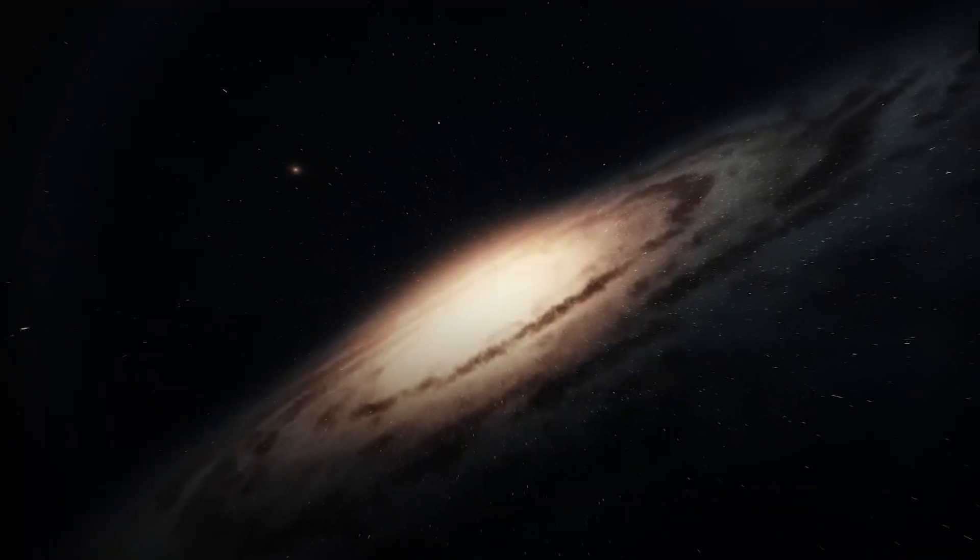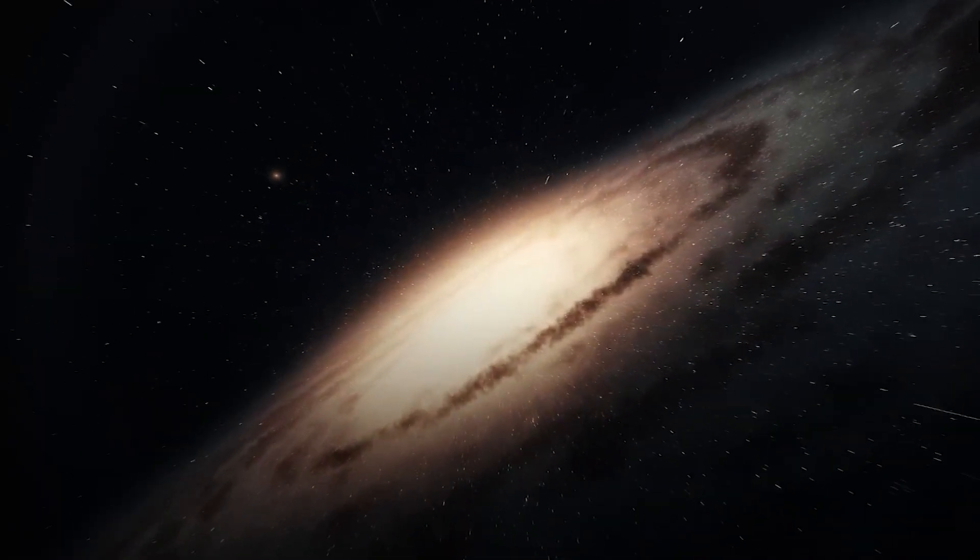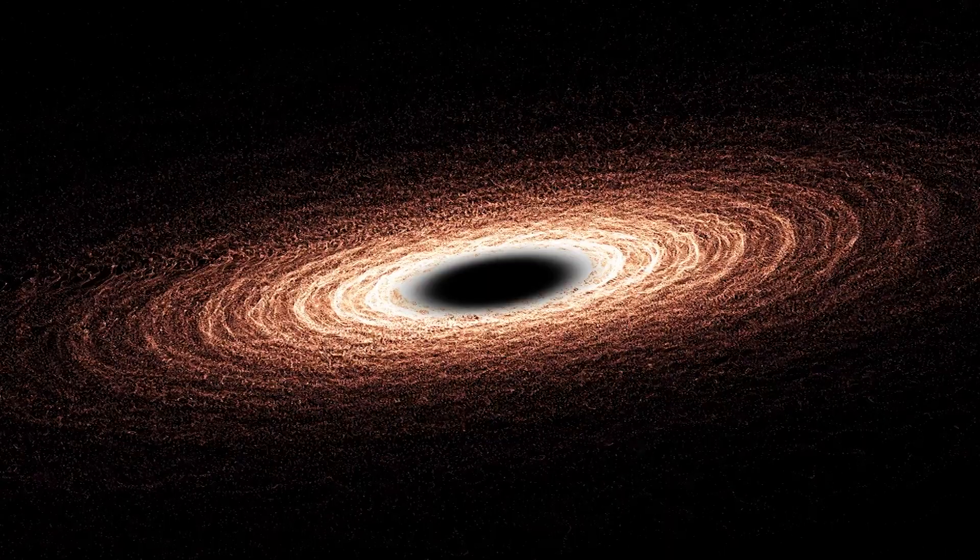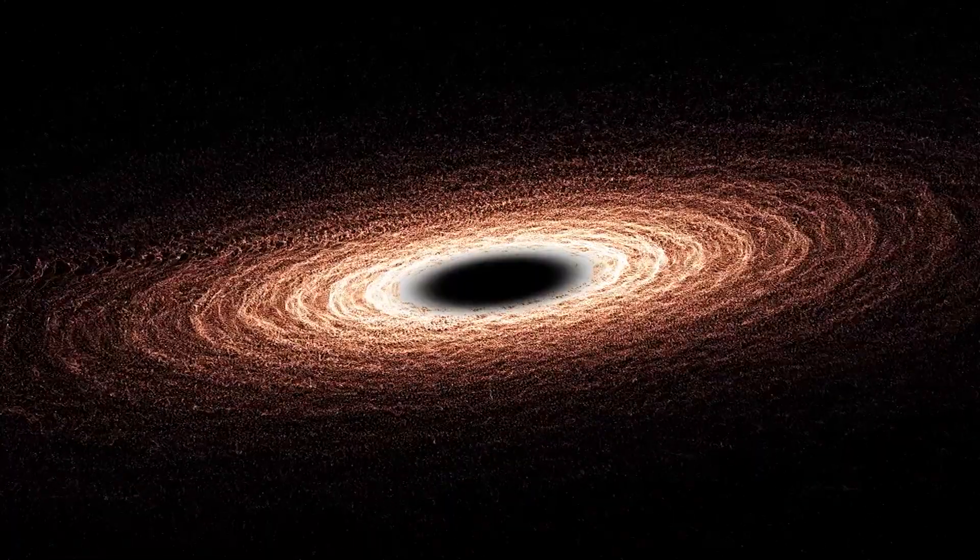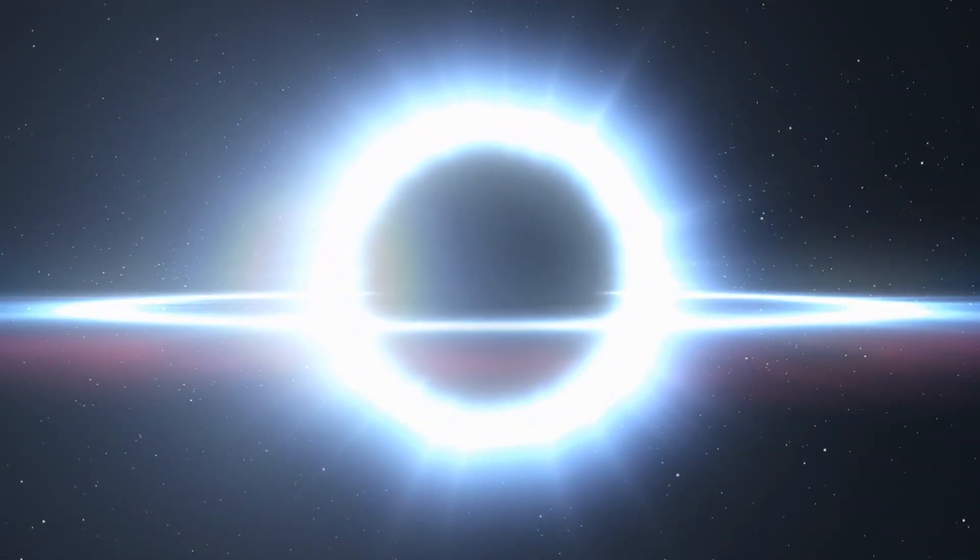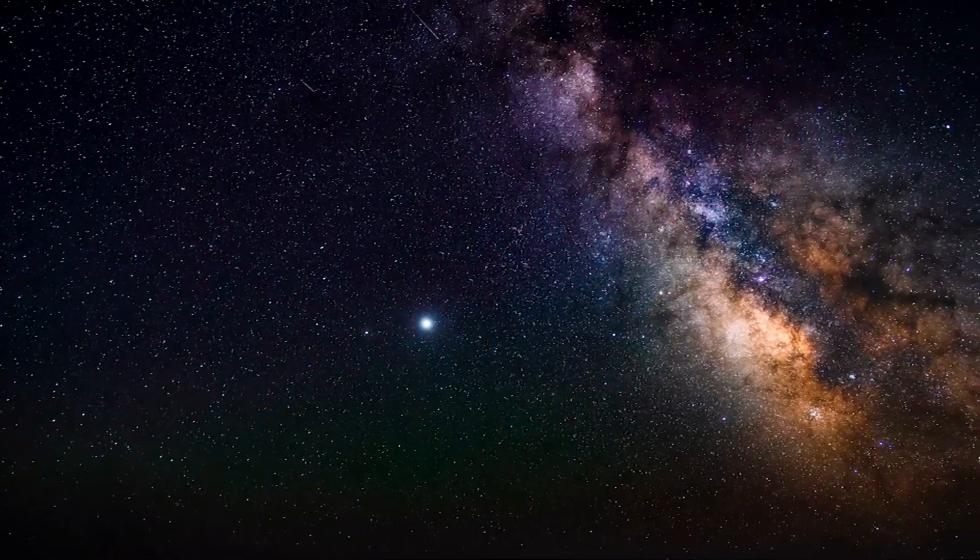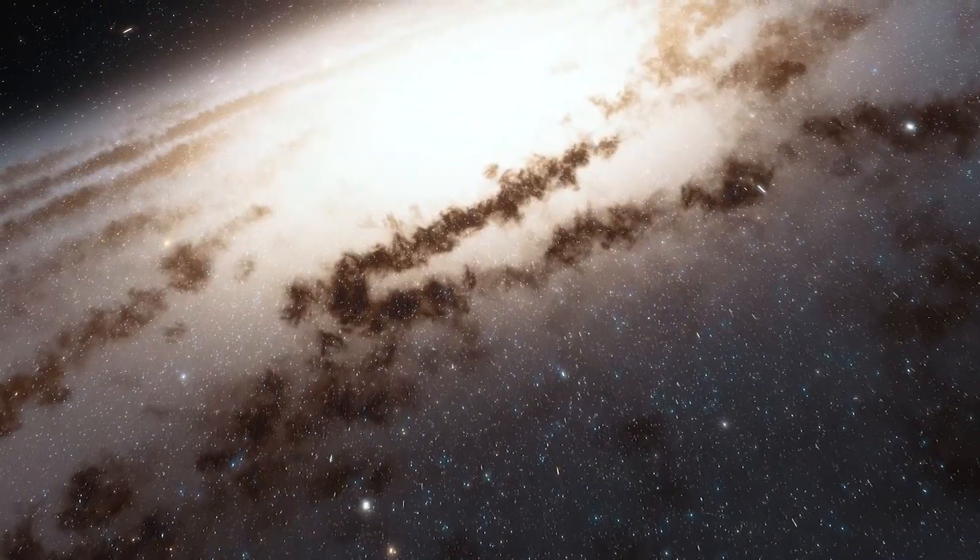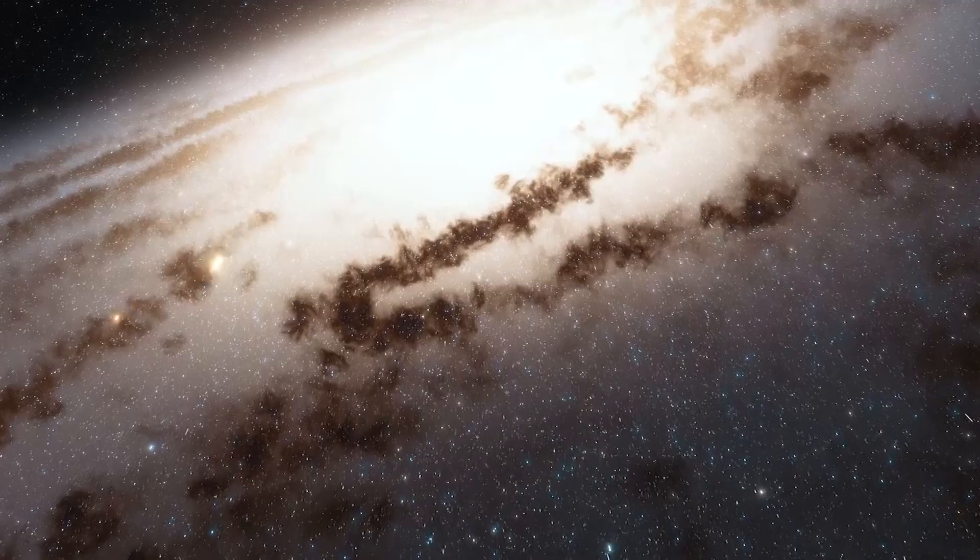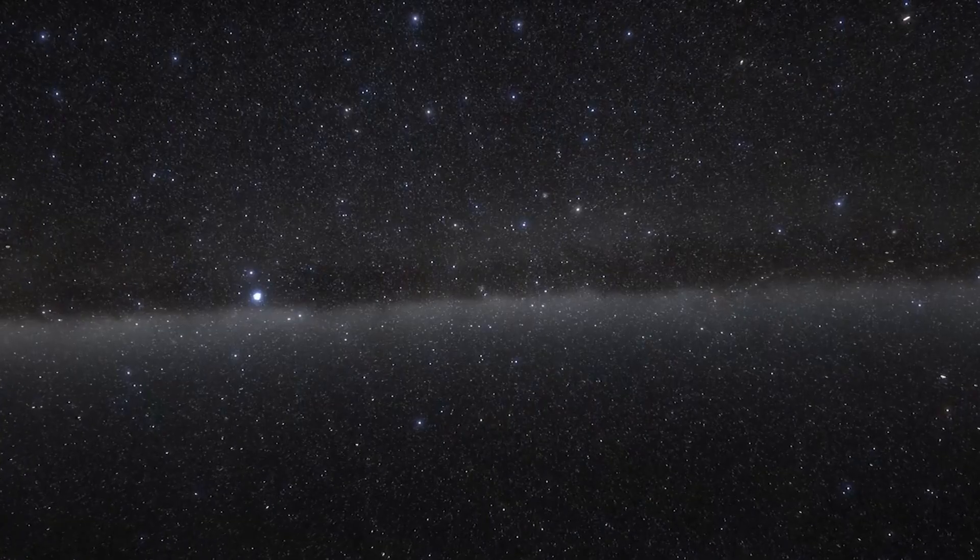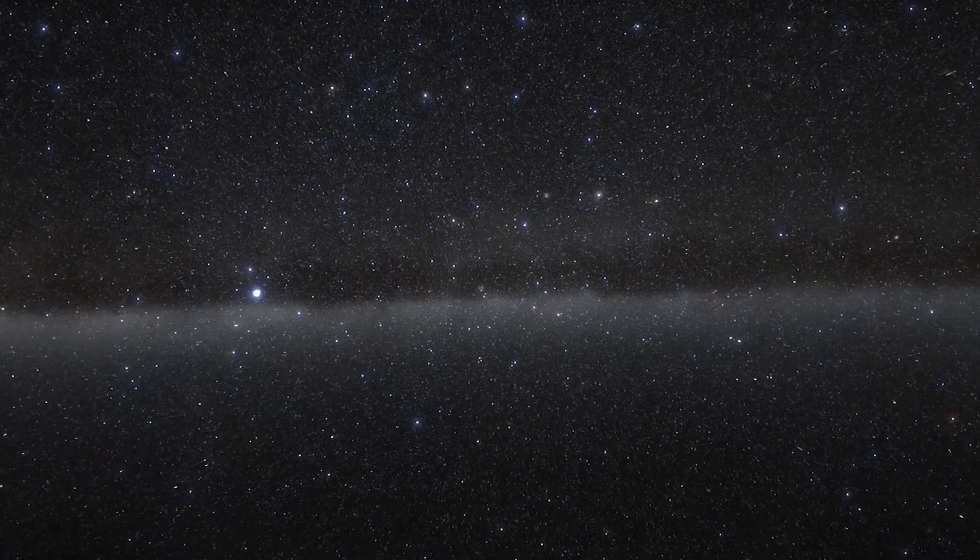According to NASA, a black hole is a place in space where gravity pulls so much that even light cannot get out. These astronomical objects have a gravity pull so strong that nothing can escape it. It has a surface called an event horizon, which defines the boundary where the velocity needed to escape exceeds the speed of light, which is the technical speed limit of the cosmos.